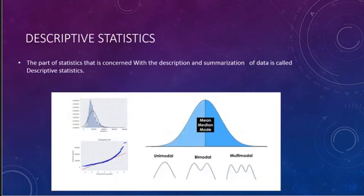Let us see what descriptive statistics is. Descriptive statistics is the part of statistics concerned with the description and summarization of data. We can see a picture here that defines descriptive statistics — for example, data that is unimodal, bimodal, or multimodal. Mean, median, and mode all come under descriptive statistics.